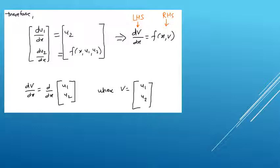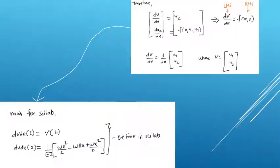So dv/dx = f(x, v) is very similar to a first-order ODE that we usually write. We have now seen how to mathematically express a second-order ODE as two first-order ODEs. From here onwards, we will focus on how to write these differential equations in Scilab, since our main objective is to use Scilab to solve second-order ODEs.